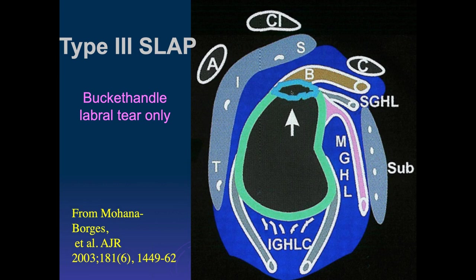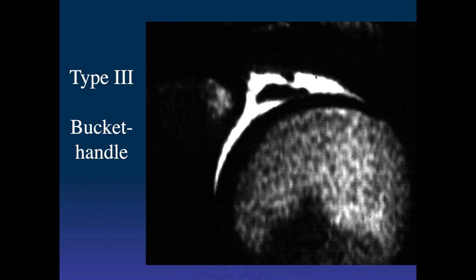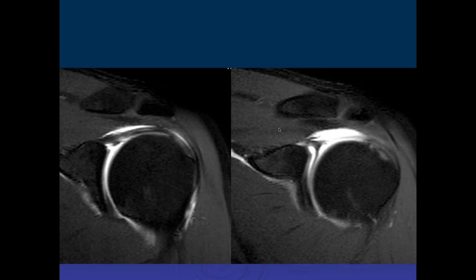Type 3 is a bucket-handle tear that involves just the labrum with the biceps anchor intact. Here the biceps tendon is intact but the superior labrum is torn and separated from both the biceps tendon and the superior glenoid. Here's another bucket-handle tear with intact biceps anchor — a Type 3 labral tear. Clinically, the Type 2 is much more significant — much more associated with clinical symptoms than Types 1 or 3.